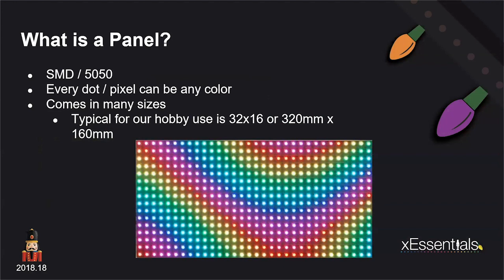What we're used to seeing in this hobby is either 5050s or SMDs. If you've seen an LED strip, those have 5050s on them — a 5050 millimeter light that has three different colors inside of it and a controller on the back — versus an SMD where it's got those same three colors but the controller is inside of it. They're arranged into a matrix and can be any color of the rainbow. The typical size in the hobby is 32 pixels wide by 16 tall, or 320mm by 160mm, which is a resolution of 512 pixels. Triple that to get the actual channel count.